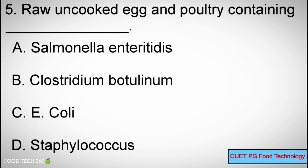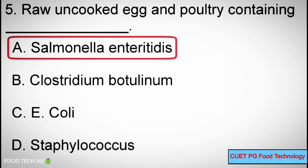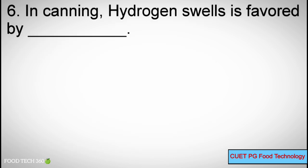Question number 5: Raw uncooked egg and poultry contain — Options: A) Salmonella enteritidis, B) Clostridium botulinum, C) E. coli, D) Staphylococcus. Correct answer: A) Salmonella enteritidis.